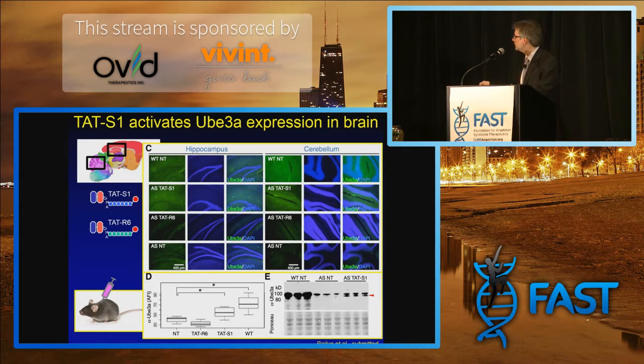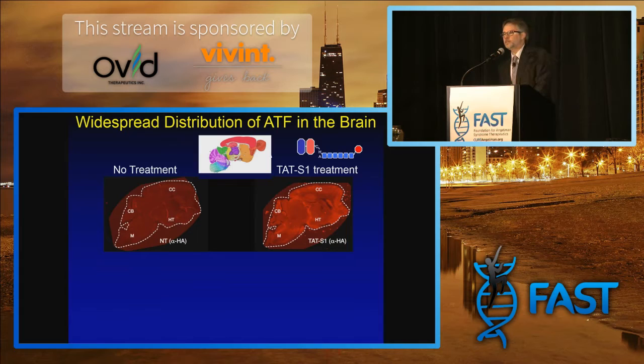We can quantitate that — we can show the protein levels with a Western blot, and we can see that when we treat them, we also see an increase in the UBE3A protein. So we know that we have the ability to turn this gene on in the brains of mice, and that's very exciting.